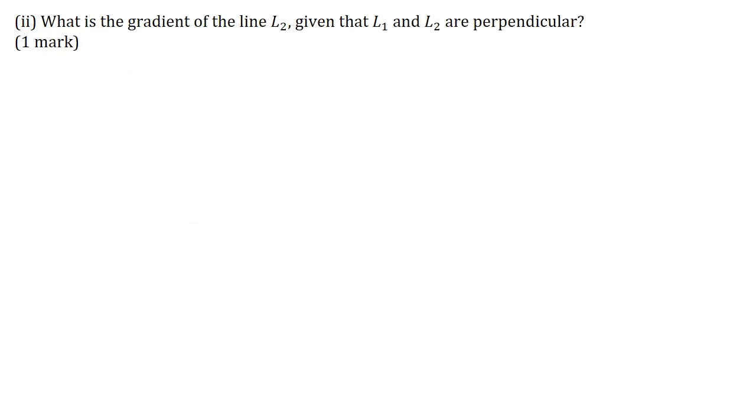Part 2, what is the gradient of the line L2 given that L1 and L2 are perpendicular, for one mark. For perpendicular lines, the product of their gradients is equal to minus 1. So m1 multiplied by m2 is equal to minus 1. This implies that m2 is equal to minus 1 over m1.